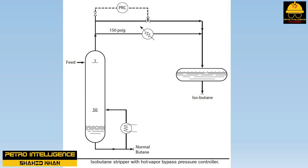To lower the tower pressure, the Hot Vapor Bypass Pressure Recorder Controller valve is closed. This forces more vapor through the condenser, which in turn lowers the temperature in the reflux drum. As the liquid in the reflux drum is at its bubble point, reducing the reflux drum temperature will reduce the reflux drum pressure. As the stripper tower pressure floats on the reflux drum pressure, the pressure in the tower will also decline. The net effect of reducing the stripper pressure was to greatly reduce the amount of isobutane in the heavier normal butane bottoms product. There is no doubt most of the improvement in fractionation was due to enhanced tray efficiency, which resulted from suppressing tray deck leaking or dumping. However, there was a secondary benefit of reducing tower pressure: increased relative volatility.